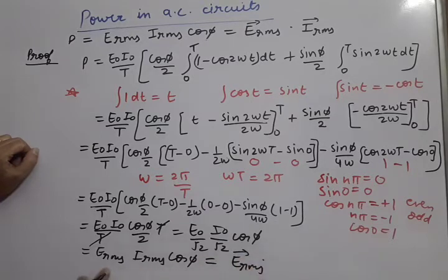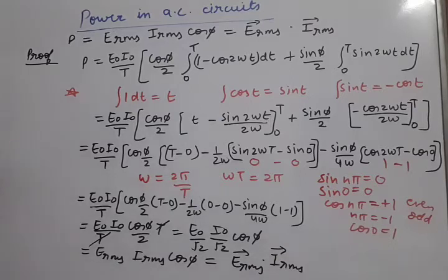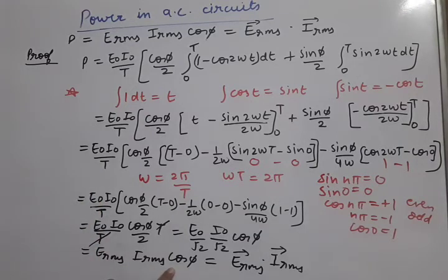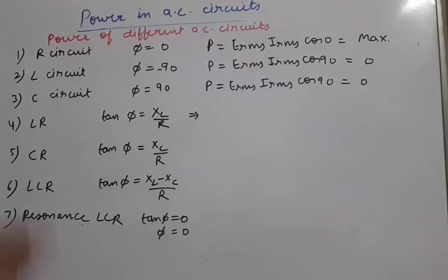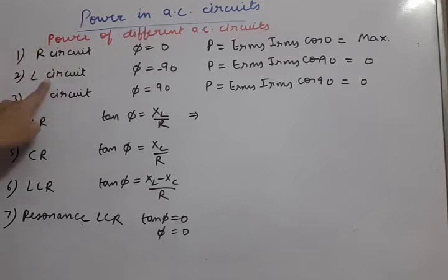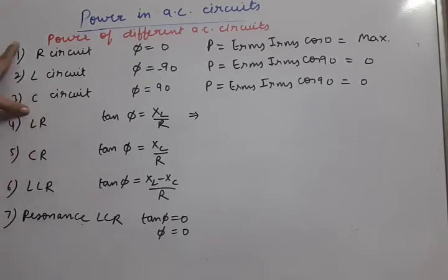So whenever the power of any AC circuit is asked, the formula is P = E_RMS × I_RMS × cos φ, or in dot product form: E_RMS·I_RMS cos φ = Ē · Ī. This is the final answer of power. Now we can apply the power formula for different AC circuits - we will now solve the special cases for all six circuits.